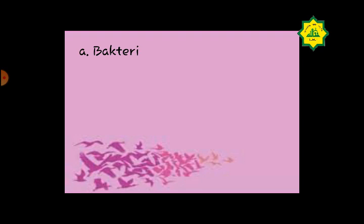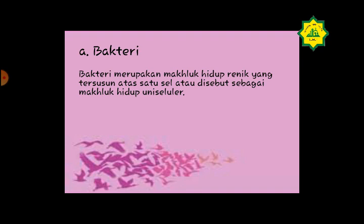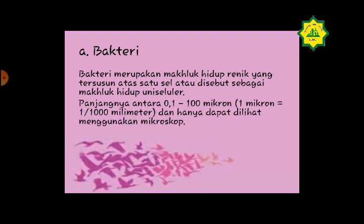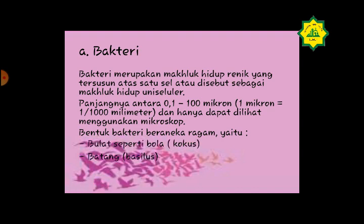Kelompok atau kingdom monera terdiri atas organisme unicellular, yaitu organisme bersel satu yang berukuran mikroskopis. Kelompok monera lebih dikenal sebagai kelompok bakteri. Seluruh organisme dari monera tersusun atas sel prokaryotik karena tidak memiliki membran inti, dan hanya dapat dilihat menggunakan mikroskop. Bakteri merupakan makhluk hidup renik yang tersusun atas satu sel atau disebut makhluk hidup unicellular, dengan panjang antara 0,1 sampai 100 mikron. Bentuk bakteri beraneka ragam: bulat (kokus), batang (basilus), dan spiral (spirul).